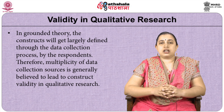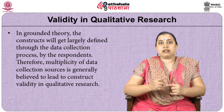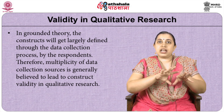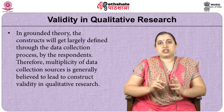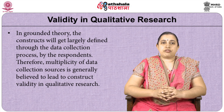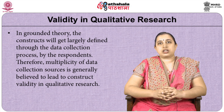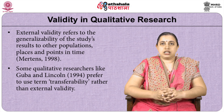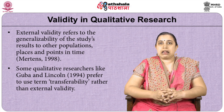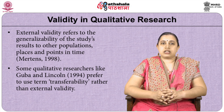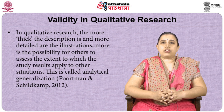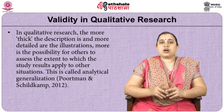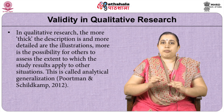In grounded theory, the constructs get largely defined through the data collection process, because in grounded theory one does not go through the comprehensive process of literature review before doing data collection — the researcher directly goes to the field. Therefore, multiplicity of data collection sources is generally believed to lead to construct validity in qualitative research. External validity refers to the generalizability of a study's results to other populations, places and points in time. Some qualitative researchers, like Guba and Lincoln in 1994, prefer to use the term 'transferability' rather than external validity. In qualitative research, the thicker the description and more detailed the illustrations, the greater the possibility for others to assess the extent to which the results apply to other situations. This is called analytical generalization.